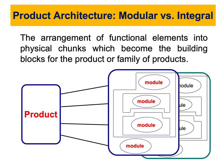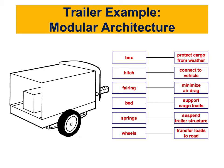I'll show two examples to illustrate the difference. The first is a simple trailer schematic representing modular architecture. The components — the box, hitch, fairing, beds, springs, and wheels — each perform one specific task. The box protects cargo from weather, the bed supports the cargo load, and the wheels transfer load to the road for mobility. Each of these is a chunk with a single function.